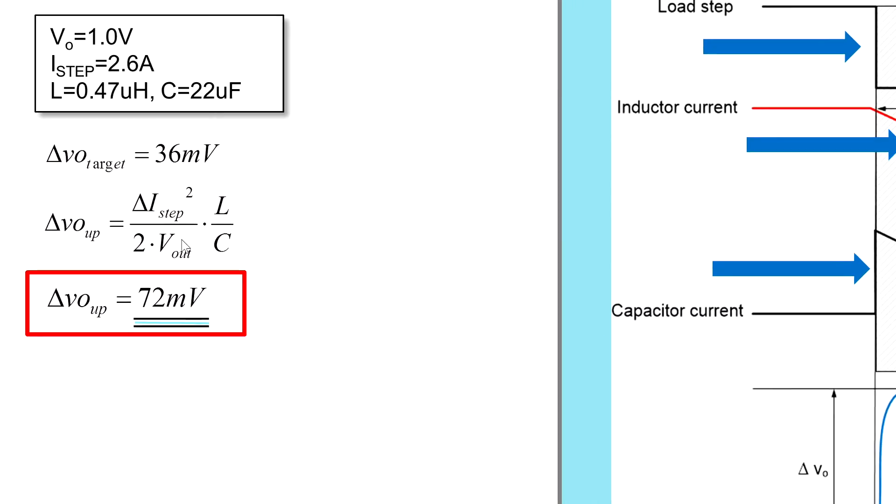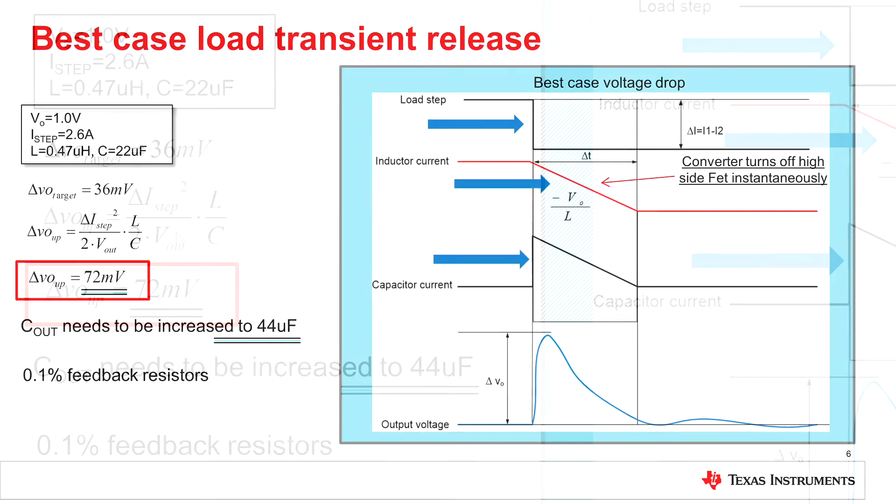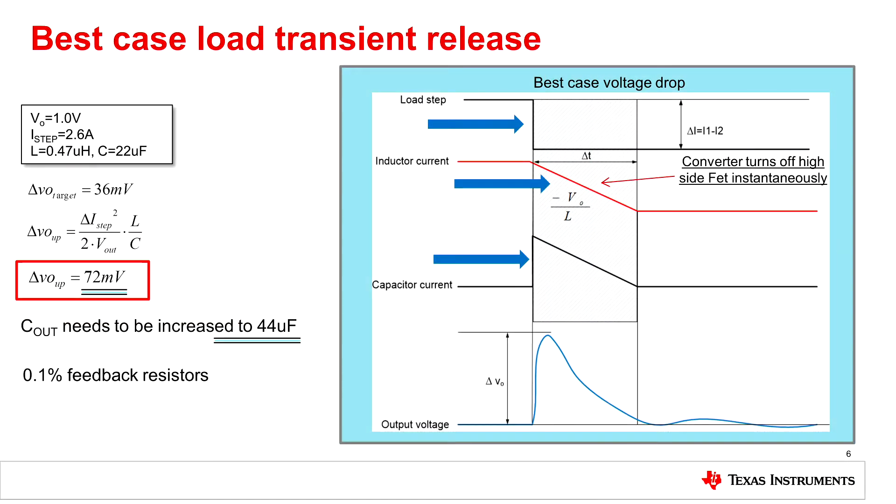So in order to meet the 36mV we either need to increase the output capacitor to 44µF or use 0.1% feedback resistors. 44µF is the smallest capacitor value we can use.